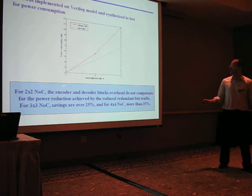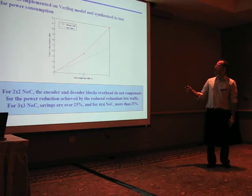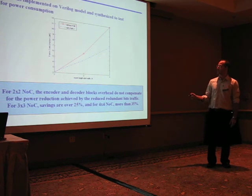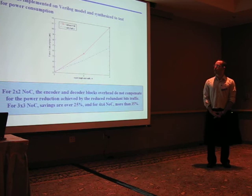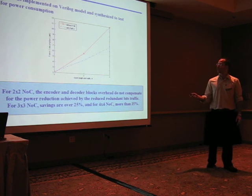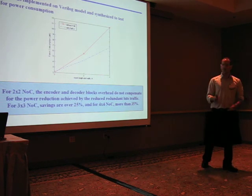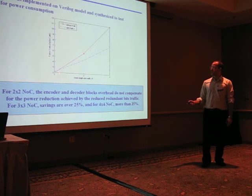In red we can see a network on chip without the implementation of parity routing, and with the blue line we can see one which was implemented by power one, which indicates the one parity bit. We can see that for two by two network on chip.